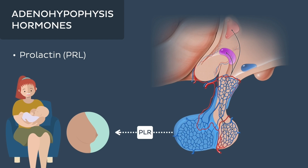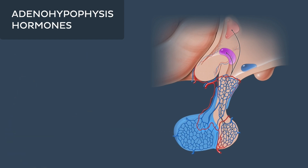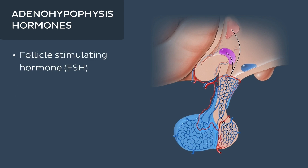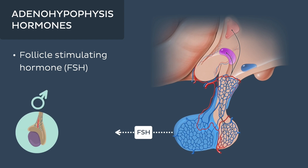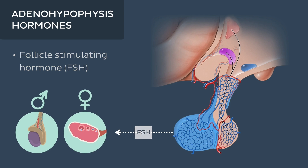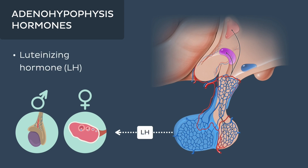The pituitary gland also releases hormones targeted towards the reproductive system. Follicle stimulating hormone, commonly known as FSH, targets the gonads and regulates the production of sperm cells in males and the maturation of ovarian follicles in females. Luteinizing hormone similarly leads to the release of sex hormones like estrogen and testosterone by the gonads, and it triggers the release of an egg from the ovary.